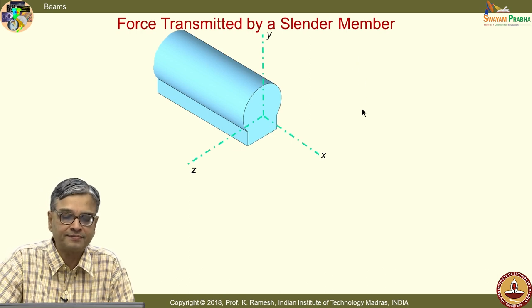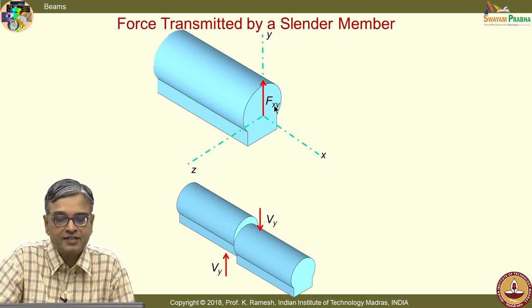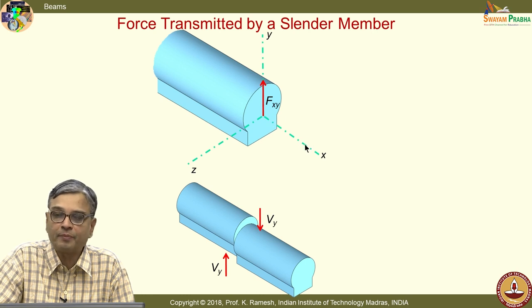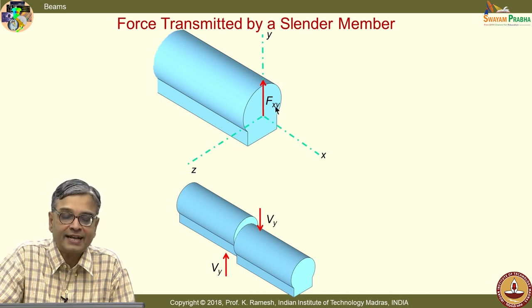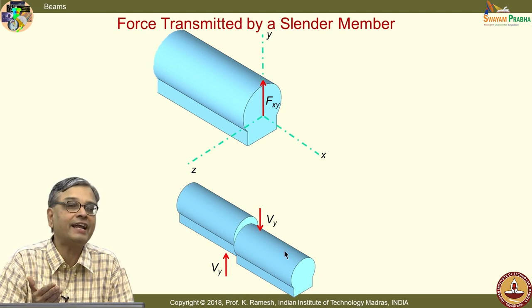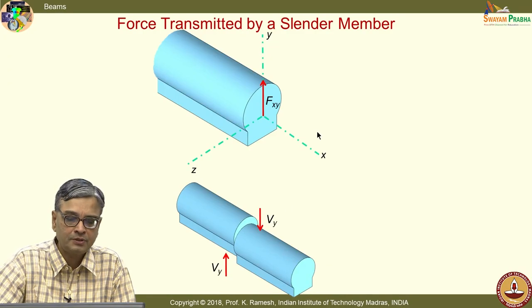There is a symbolism used in higher-level studies. A force acting on the surface of the member is denoted by two subscripts: the first subscript denotes the plane on which it is acting, indicated by the outward normal, and the second denotes the direction of the force. So a force on the x-plane in the y direction is denoted F_xy. In this course, this is simply represented as capital V with a subscript y. There are multiple symbols used in textbooks, and my interest is to expose you to these symbolisms.